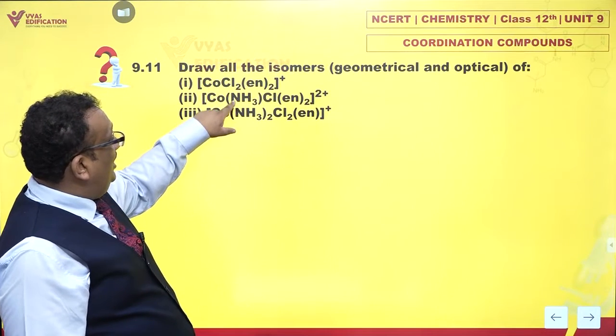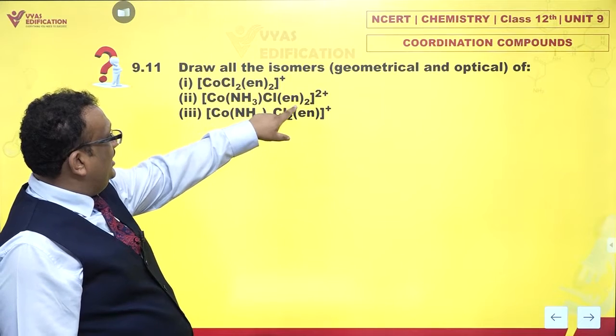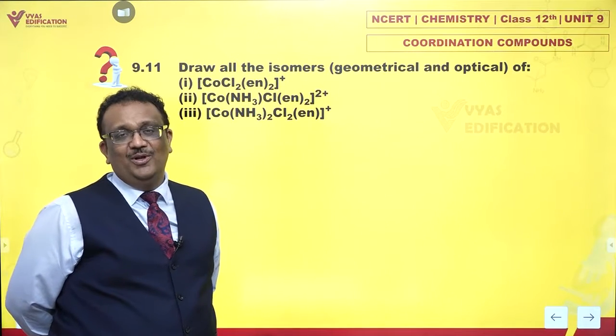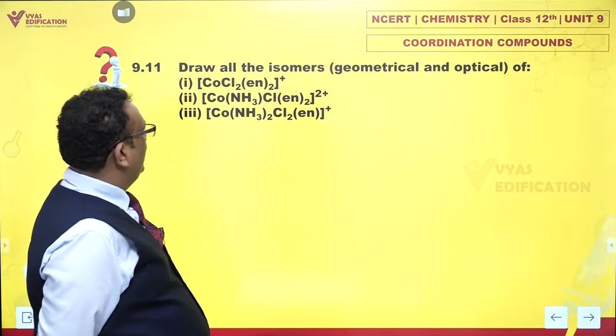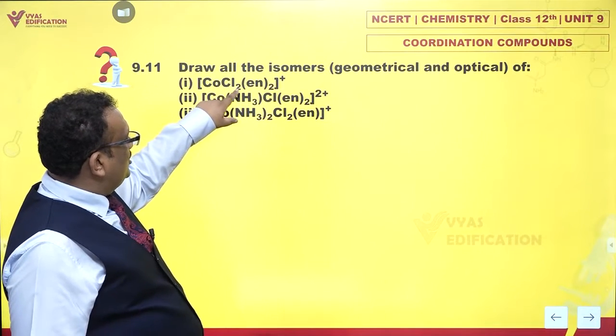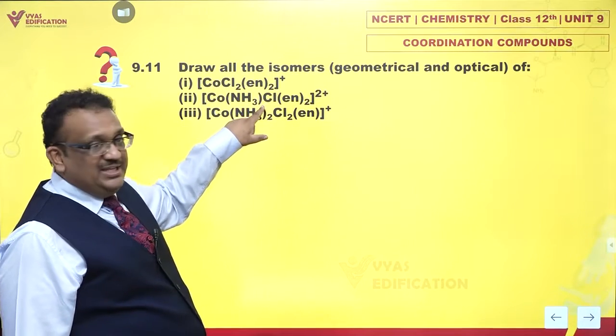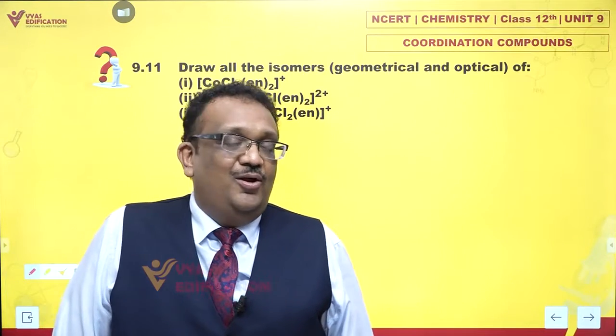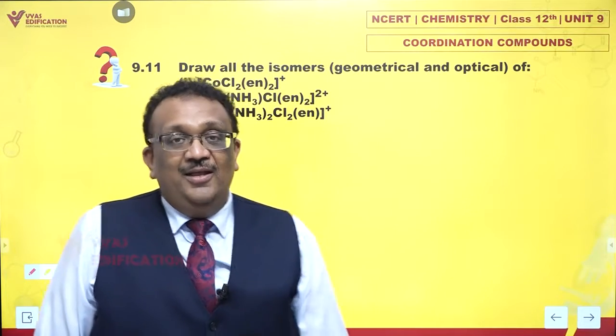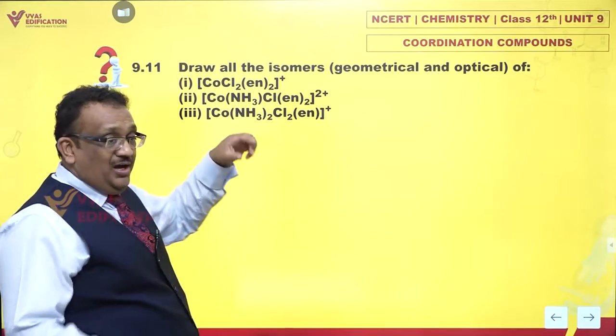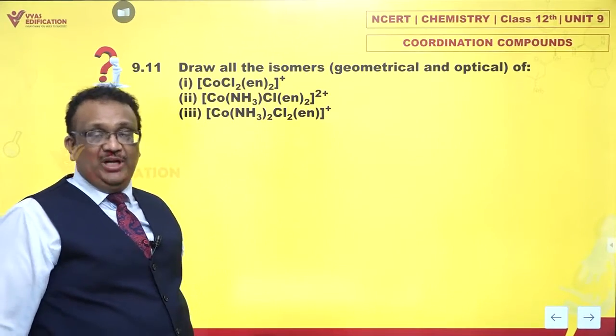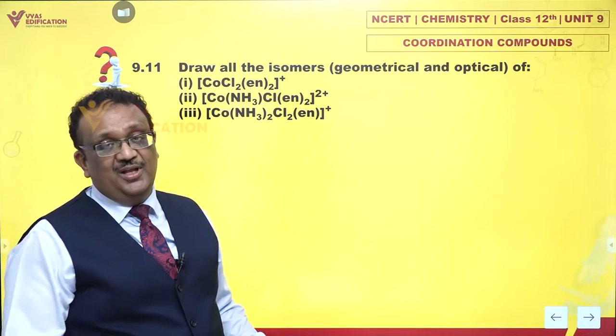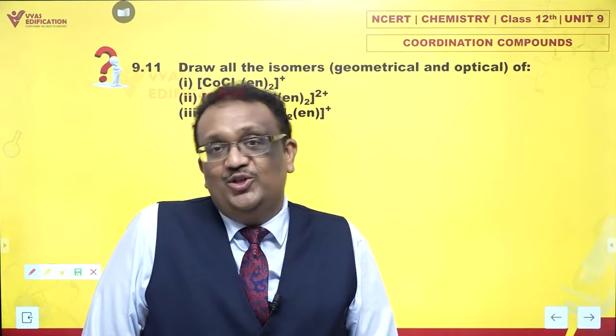If you take a look at the second part, now I have [Co(NH3)Cl(en)2]^2+. This is very similar to what we have done, except that instead of writing two Cl, I just write down one Cl and one ammonia. Would that make any difference? Not really. Again, if this Cl and ammonia are trans to each other, I would get one geometrical isomer.